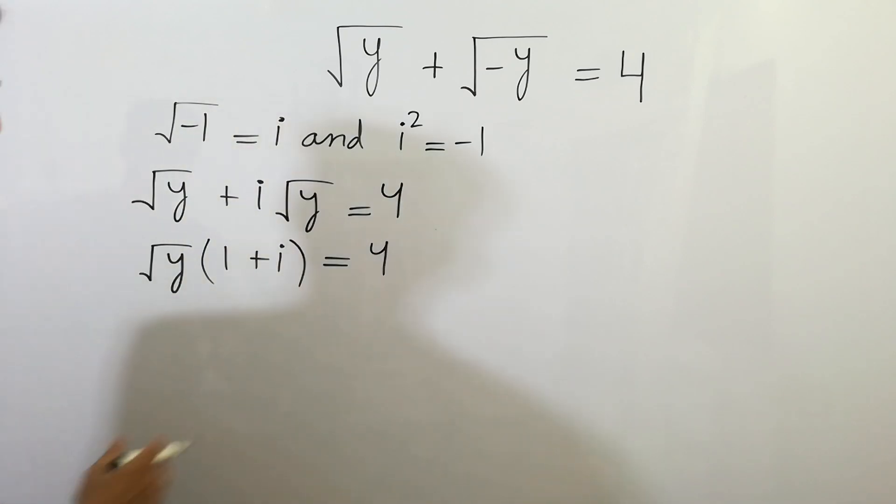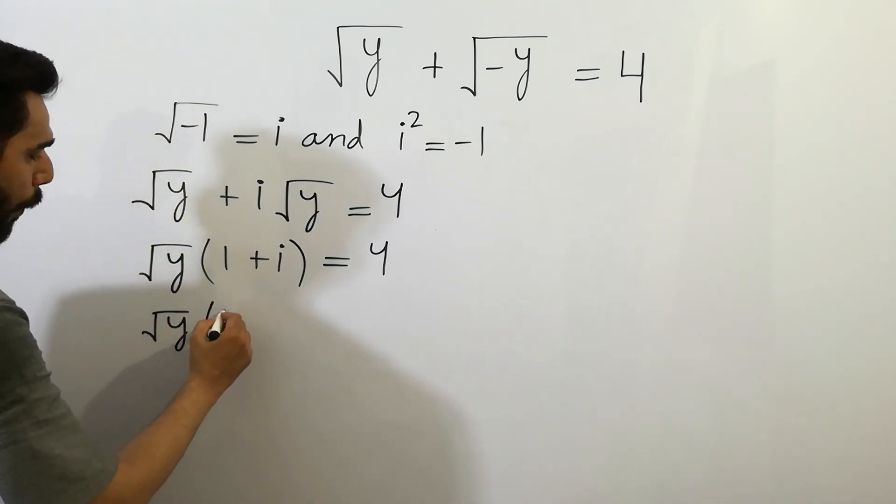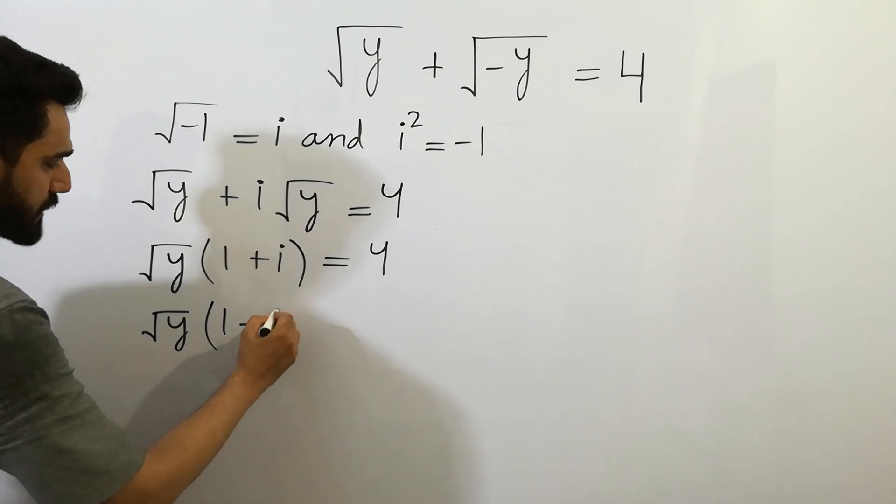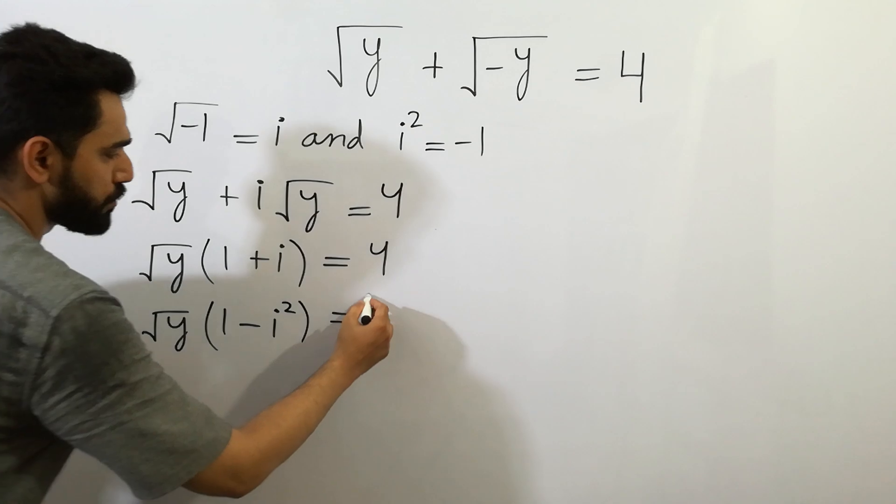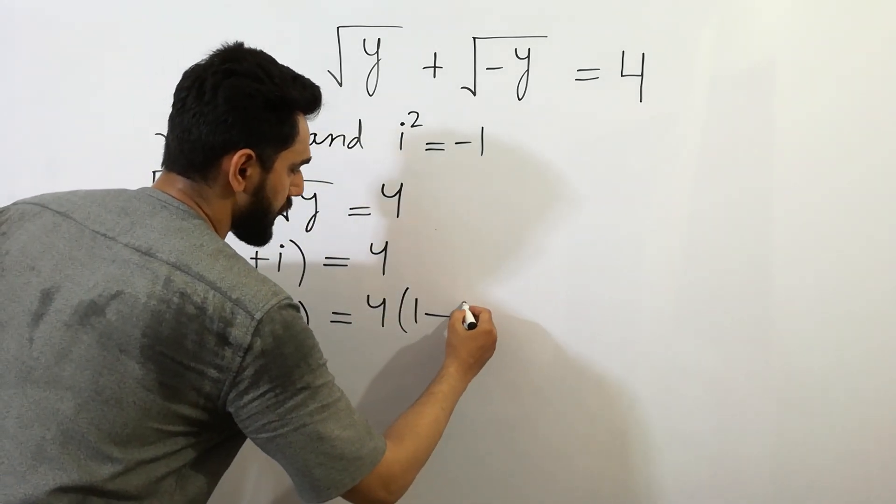So we can multiply on both sides by 1 minus i, we get 1 minus i squared is equal to 4 times 1 minus i.